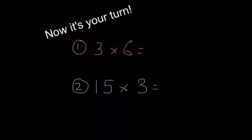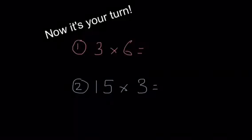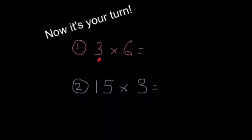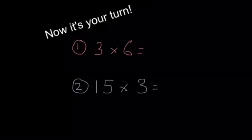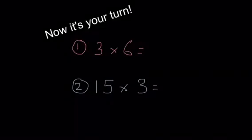Okay! Now it's your turn, guys! This time you've got 2 different questions to have a go at. The first one is 3 times 6. So how many different ways can you show how to get the answer? How can you also show how you can check if your answer is correct?